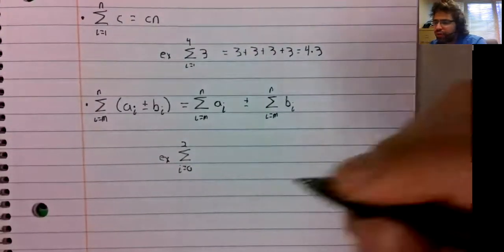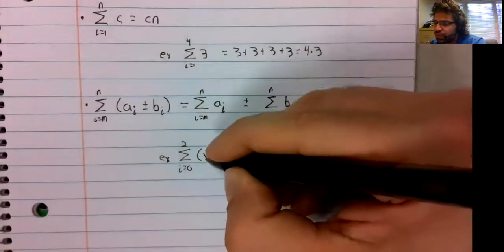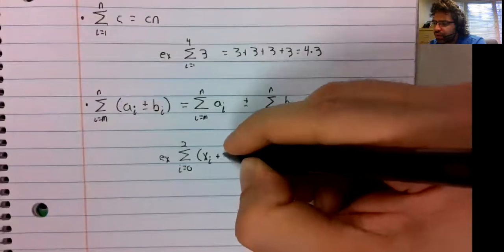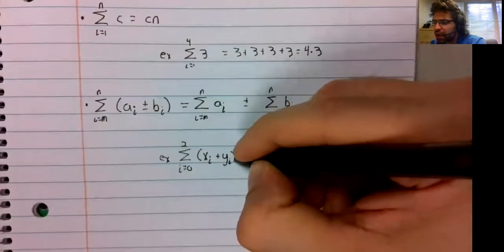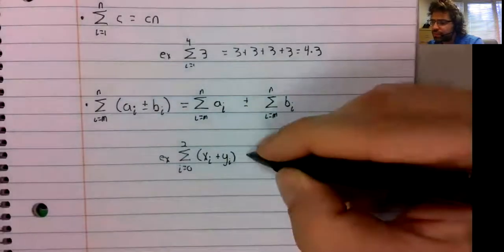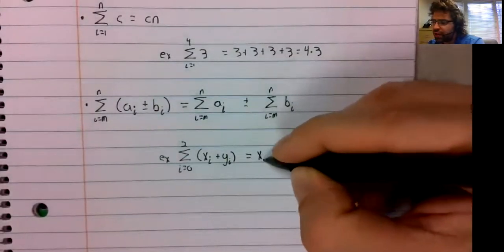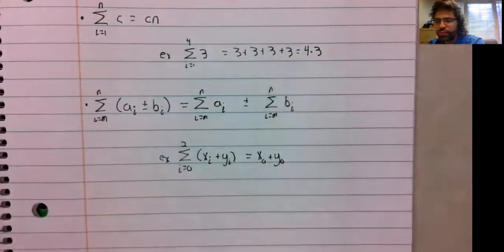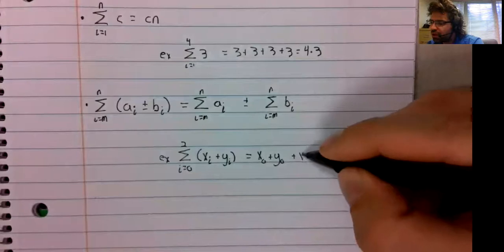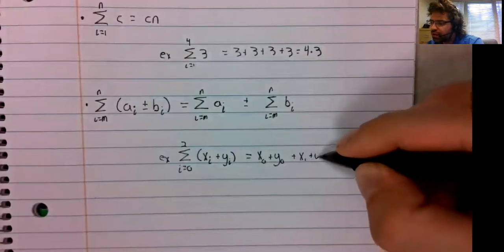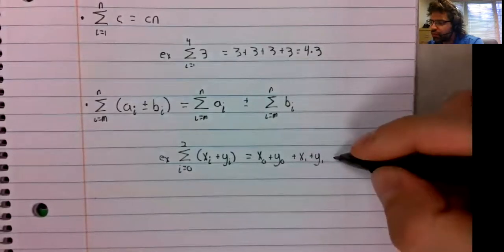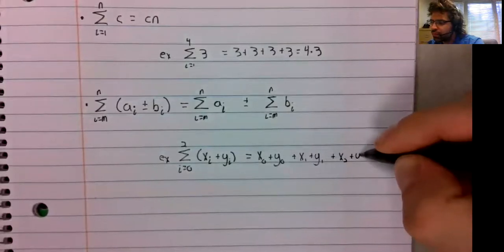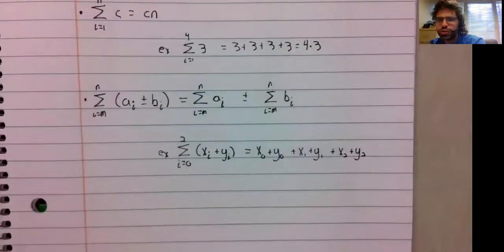Say you go from zero to two of x sub i plus y sub i. We plug in zero. We plug in one. We plug in two.